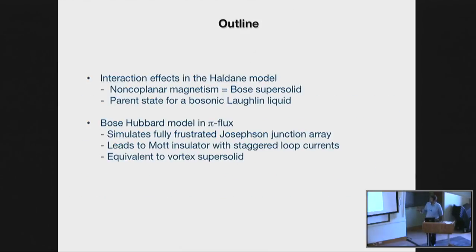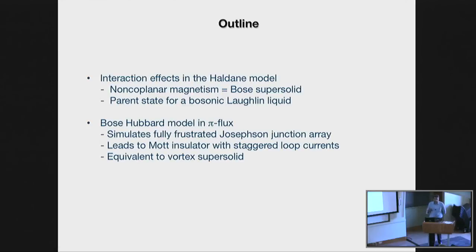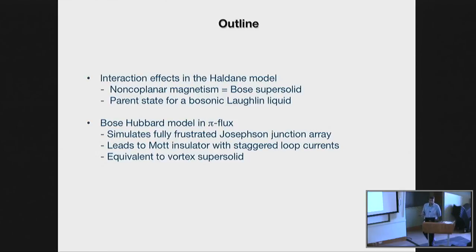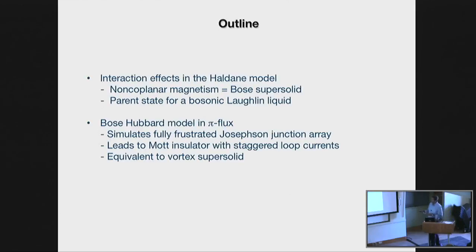There are two parts to this talk. The first part I'll talk about interaction effects in the Haldane model, and I'll argue — and show numerically — that it leads to certain types of non-coplanar magnetic orders in cases where spin degrees of freedom play a role. This non-coplanar magnetic order, if you think in the language of bosons, corresponds to some kind of super solid phase. One can start from this and melt this super solid phase, which gives rise to a bosonic Laughlin liquid, or in spin language, a chiral spin liquid in the Mott insulator of these fermions. The second part discusses what happens if you take a ladder with pi flux and think about interacting bosons.